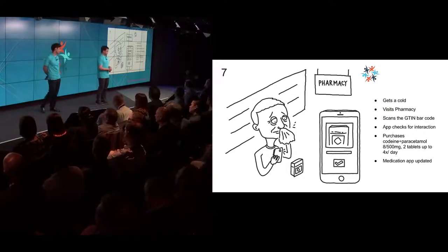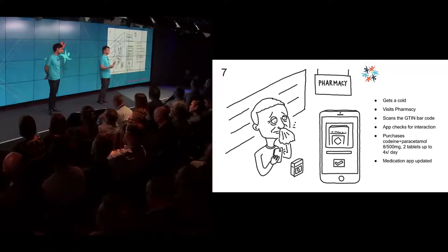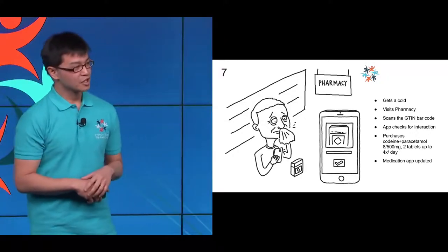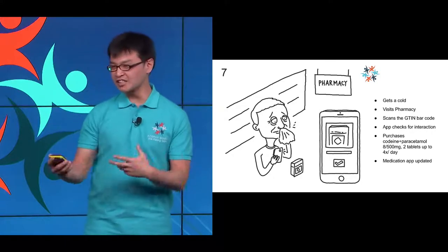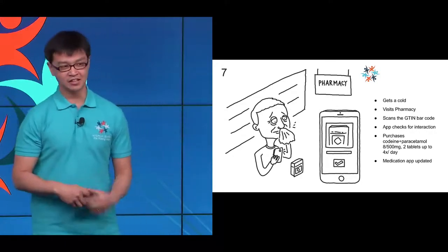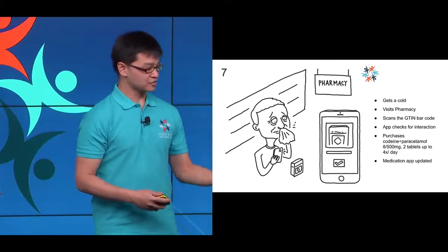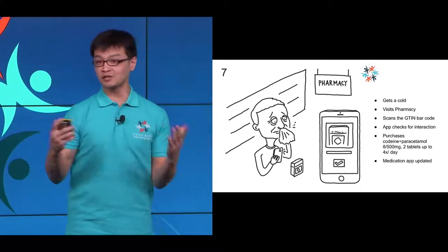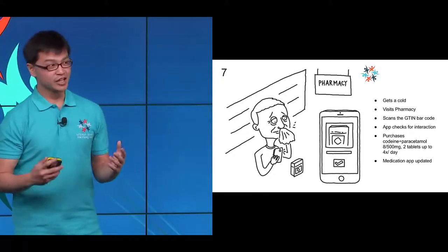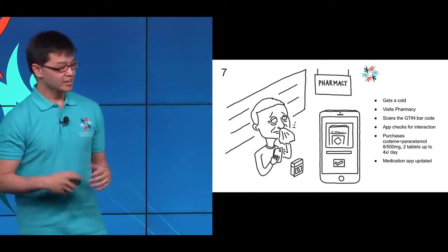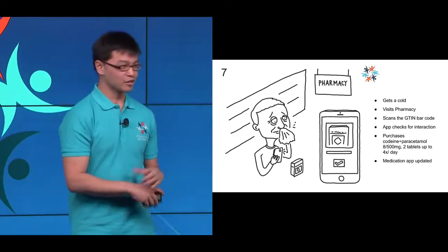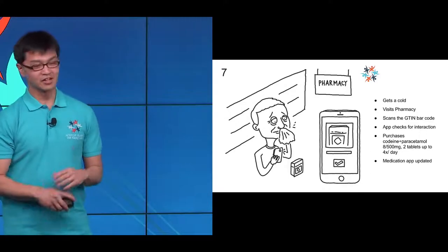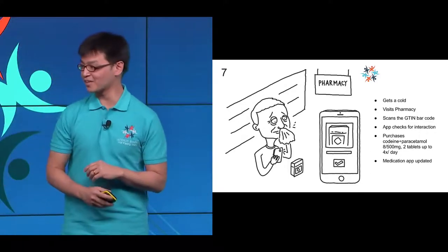Unfortunately, Michael then gets a cold. He visits the pharmacy to see whether there's something he can buy to alleviate his symptoms, but he doesn't know which medication is safe based on what he's already taking. He goes up to the shelf, and he can beep the medication box, which will automatically tell him whether there's any dangerous interactions. He settles on purchasing a combination of codeine and paracetamol, and magically, the medication app gets updated.